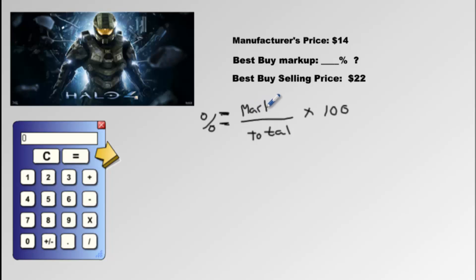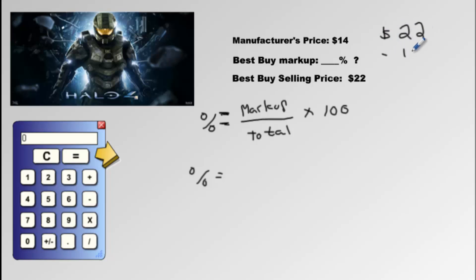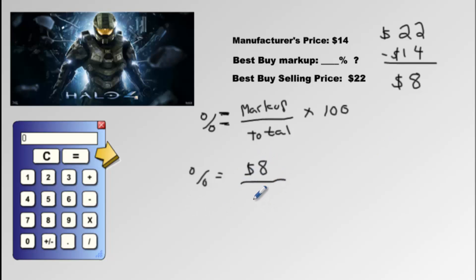So we will write: percent equals markup divided by total. We don't have a 'total number of marks' here; we have a total price. Is it $14 or $22? It's $14 — the $22 did not even exist until Best Buy made it happen. All Best Buy had was the $14 original price they paid. So we always go back to the original amount when figuring out the percent.